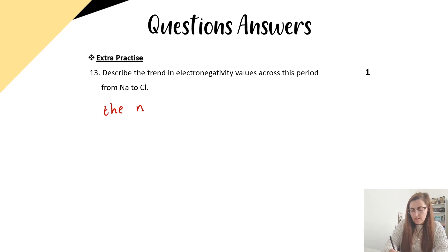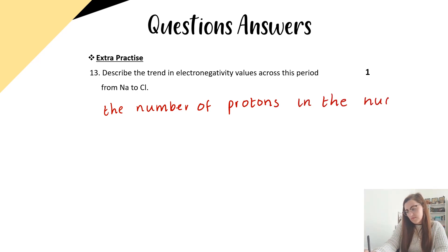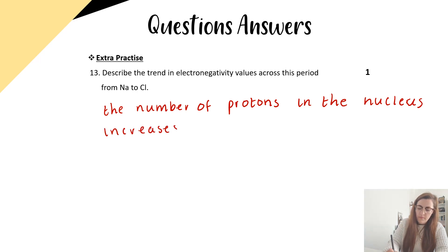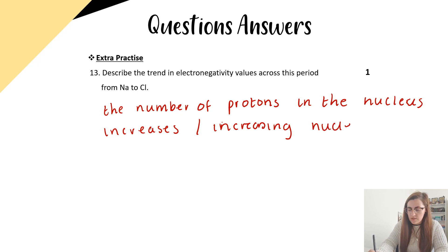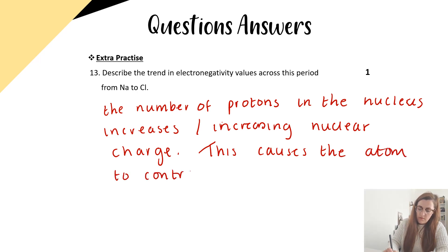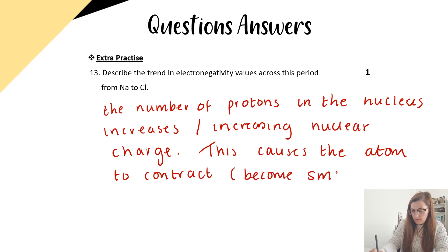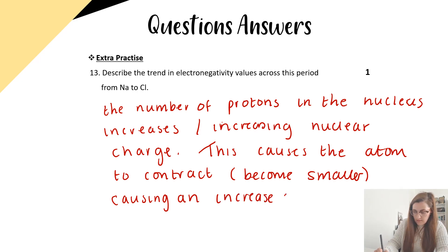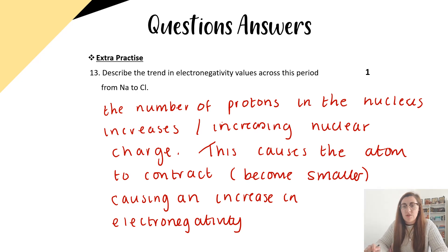Question 13 asks: describe the trend in electronegativity values going across a period from sodium to chlorine. Going across a period, the number of protons in the nucleus increases — this is the same as increasing nuclear charge. This causes the atom to contract or become smaller, causing an increase in electronegativity. Even better, say it causes an increase in an atom's attraction for bonded electrons, because that shows the examiner you understand what electronegativity means.